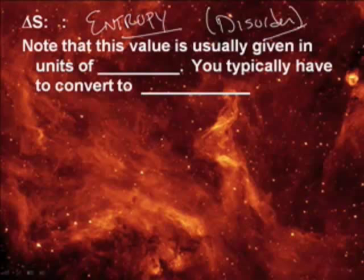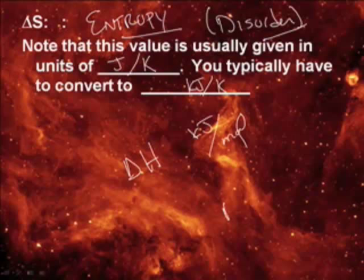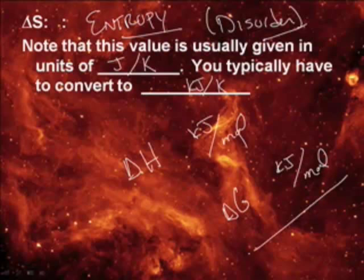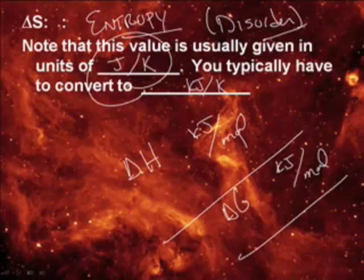The units must always be what? Usually given in joules per Kelvin. And you have to convert those to kilojoules because delta H and delta G usually show up as kilojoules. Delta H is kilojoules per mole. And delta G is kilojoules per mole. And for whatever reason, all the thermodynamic books, in fact, if you have your book open to page A21, which has the table of thermodynamic quantities, you will discover that they are in joules per Kelvin right here. And so you want to watch that.